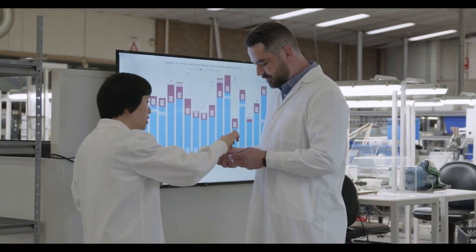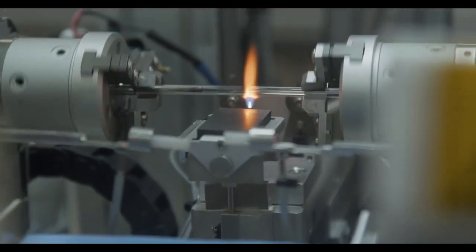Trajan has a global footprint with R&D, manufacturing, and distribution operations spanning four major continents: US, Australia, Asia, and Europe.